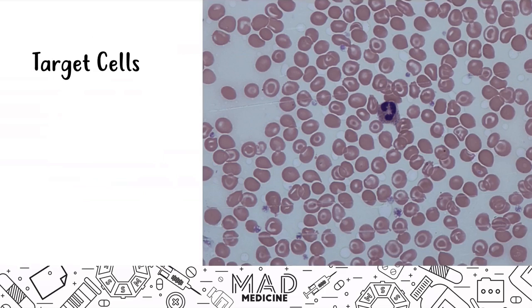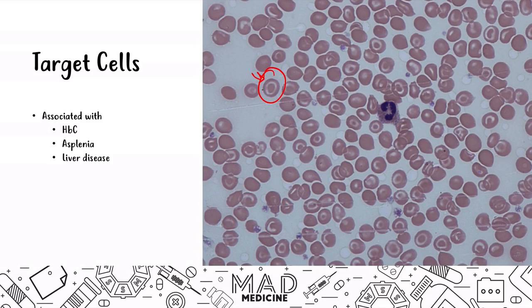Target cells are associated with several conditions: hemoglobin C, asplenia — meaning the spleen has either been removed or does not function properly — liver disease, thalassemia specifically beta thalassemia major which presents with both gene knockouts, and iron deficiency anemia can also lead to target cells.